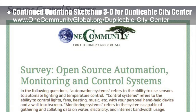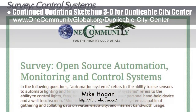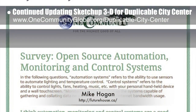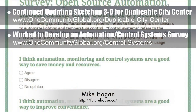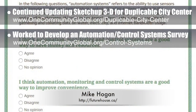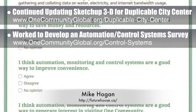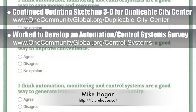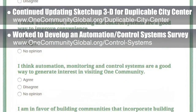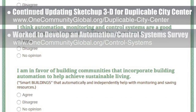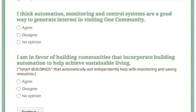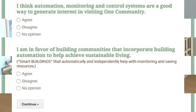We also worked with Mike Hogan, automation systems developer and business systems consultant, to develop a survey for assessing what people are interested in most about control systems and automation systems, data gathering, and related information sharing.